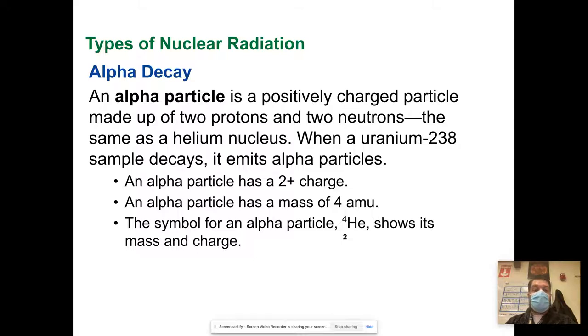An alpha particle is the same as the nucleus of a helium atom. When uranium-238 sample decays, it emits alpha particles. If you look up on the periodic table, uranium is like 235 or 236, so it has some extra mass. When it emits the alpha particle, which is two neutrons and two protons, then it jumps down to 234. An alpha particle has a plus two charge and a mass of four amus. The symbol for an alpha particle is 4He with the lower subscript two, showing its mass and charge.